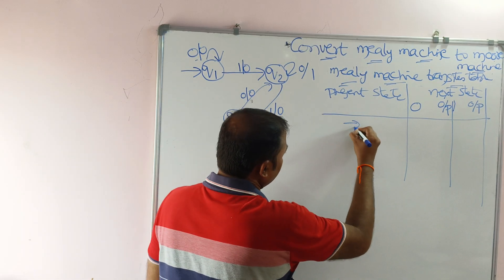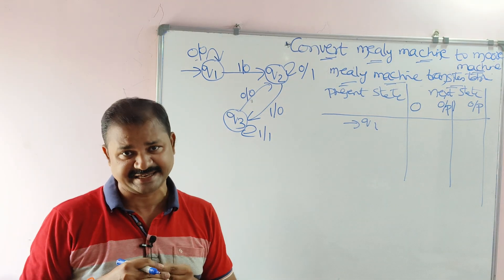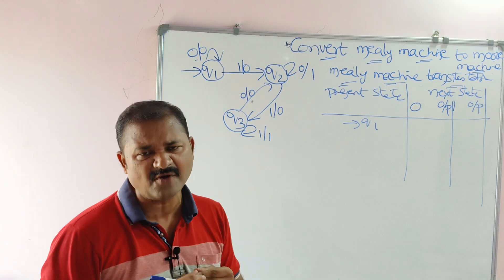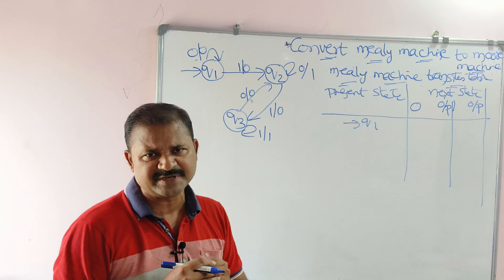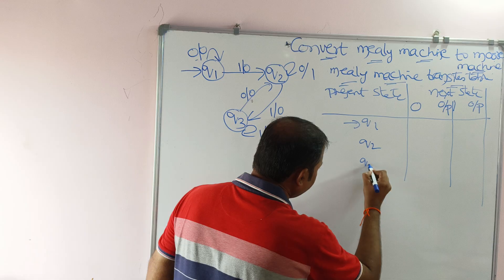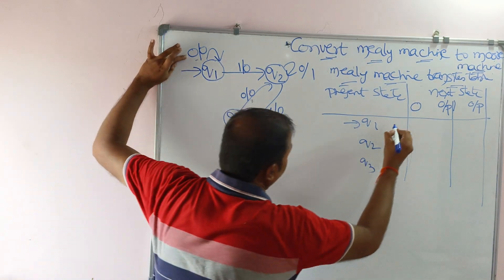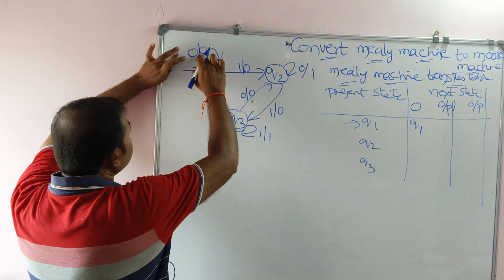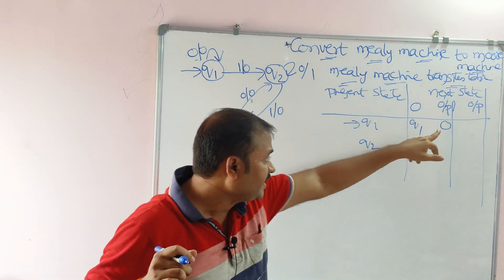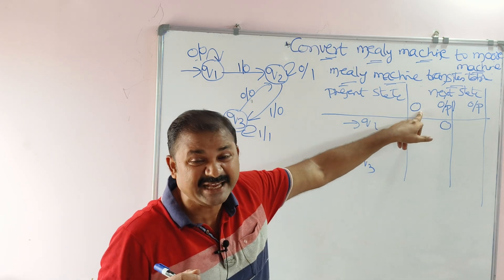The first present state is q1. In a Mealy machine or Moore machine we don't have any final state — there is no double circle state. In DFA or NFA we have a final state, whereas in a Mealy machine or Moore machine it does not have any final state. q1 on zero goes to q1 with output zero. The second number is the output, so zero is the output. This is called a Mealy machine — in a Mealy machine the output depends on the present state as well as the present input.